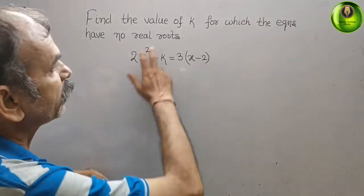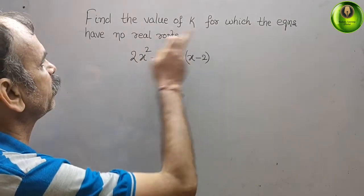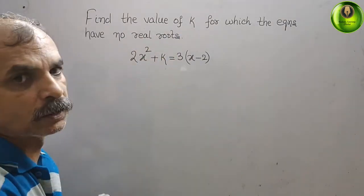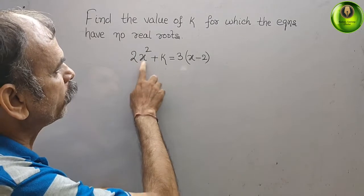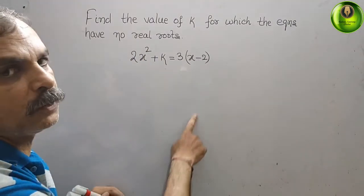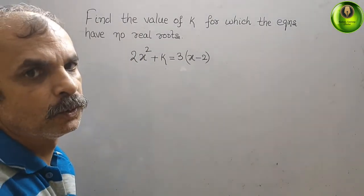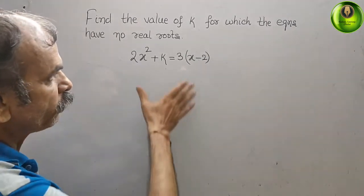Your question is find the value of k for which the equation have no real roots. The equation is 2x² + k = 3(x - 2). First, what we have to do is bring everything to the left side.